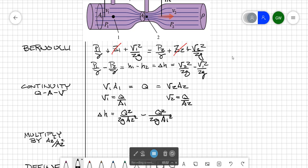And let's factor out as much as we can. So we can factor out the q squared and the 2g and multiply that by 1 over a2 squared minus 1 over a1 squared and close the brackets.